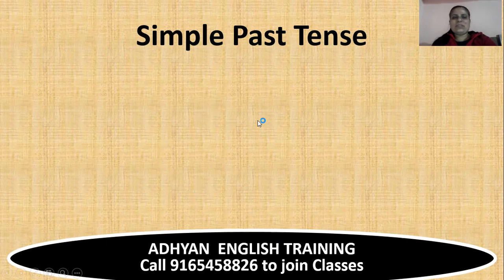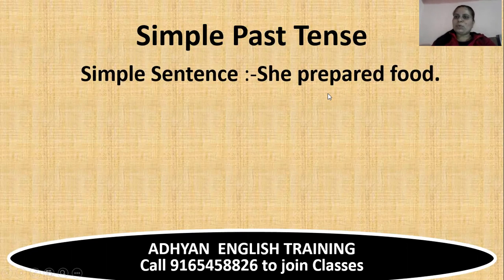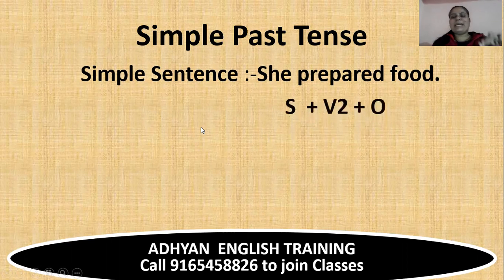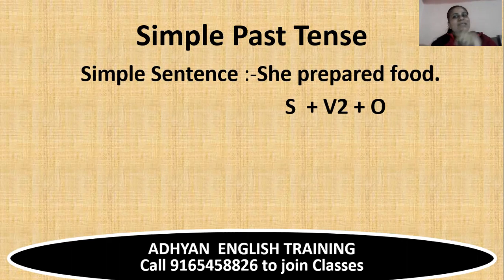So simple past tense — it is very simple. As you can see here: she prepared food, she made food. I ate ice cream. So 'I' is the subject. Like this sentence, 'she' is the subject, 'prepared' is the verb in second form, plus object. Okay.